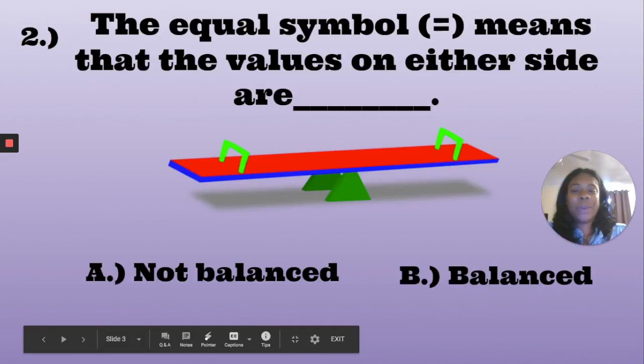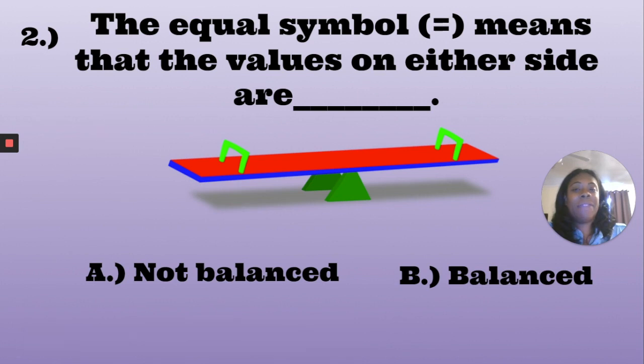Number two, the equal symbol means that the values on either side are blank. A, not balanced, or B, balanced. Pause the video and choose your answer now.